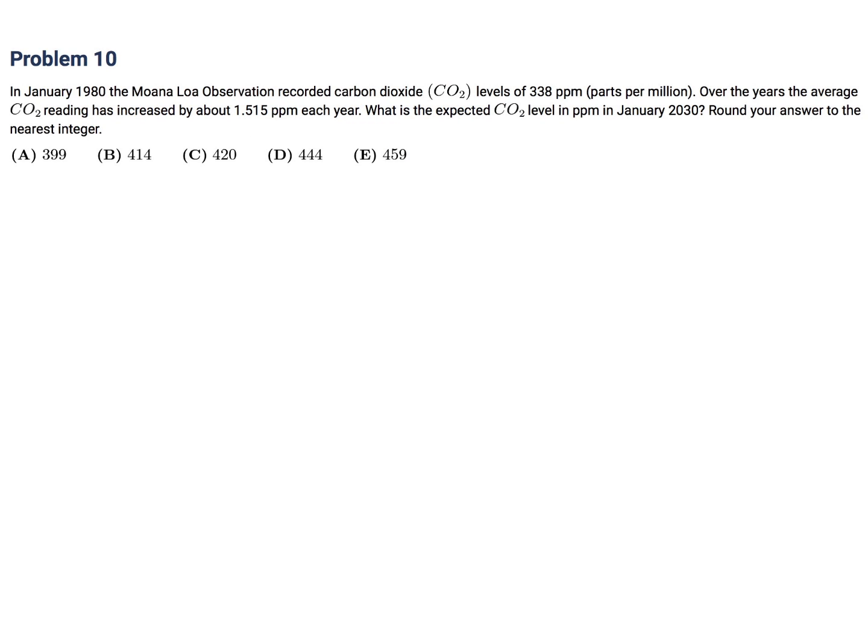In January 1980, the Mauna Loa observation recorded carbon dioxide levels of 338. Over the years, the average CO2 reading has increased by about 1.515 ppm each year. What is the expected CO2 level in ppm in January 2030? Round your answer to the nearest integer. So we're starting at 338. And we're going from 1980 to 2030. So that's 50 years, right? So plus 50. And each year, it's 1.515. Okay, so I guess we have to do this math. It would be 338 plus 75.75. I just multiplied by 100 and divided by 2. So then when you add this, it would be 413.75. And to the nearest integer, that's 414. And therefore, the answer would be B.